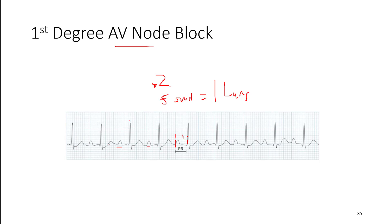Counting it up in total, this is probably 0.28 seconds — we've got 7 small boxes before we get to the Q wave. So this is a prolonged PR interval. However, we don't see any dropouts or skipped beats. Nothing abnormal besides the prolonged PR interval, so this would be a first-degree AV node block.